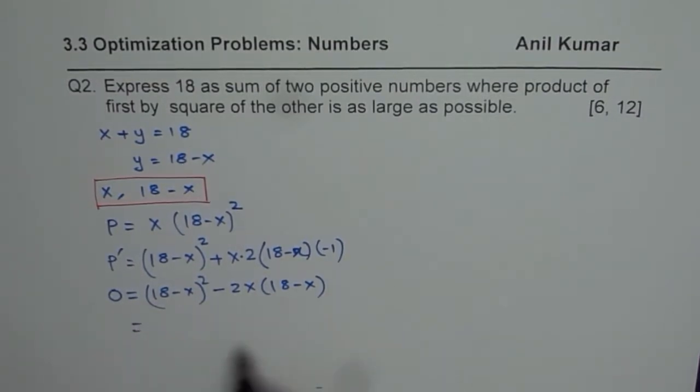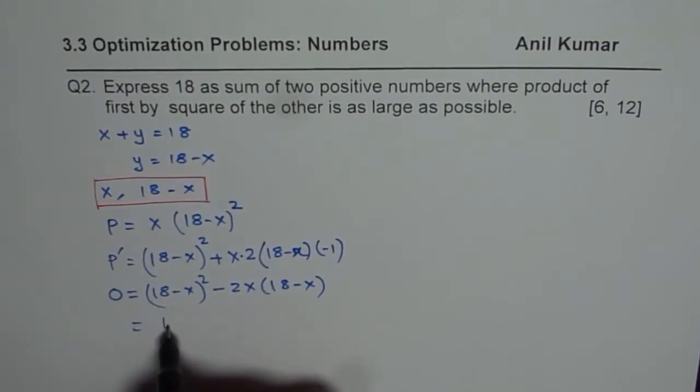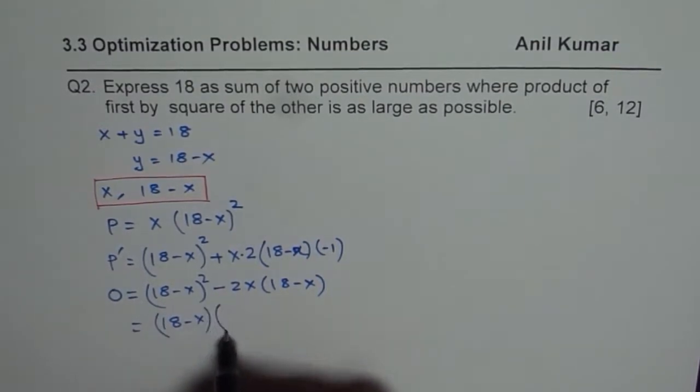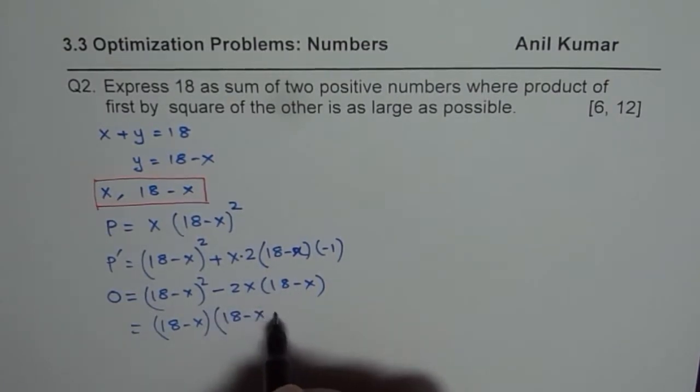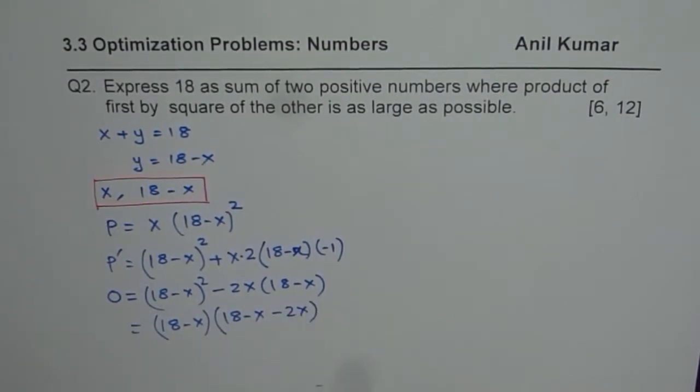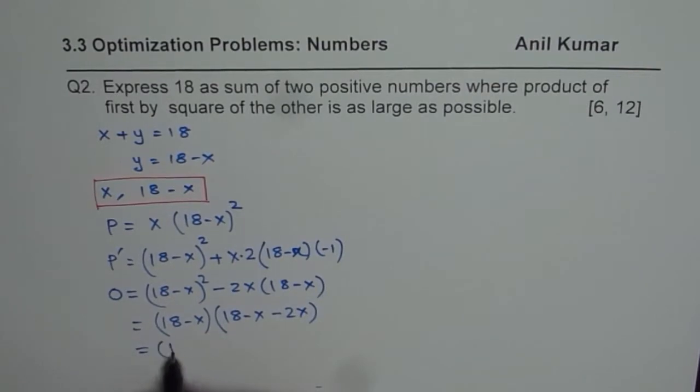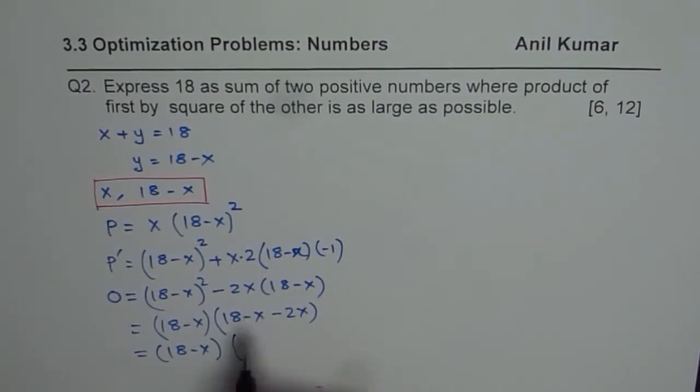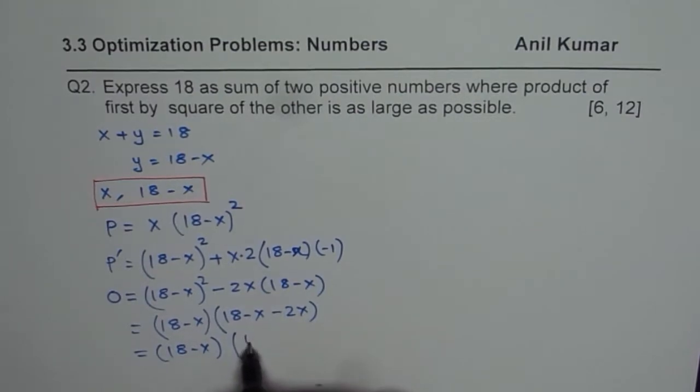Now to solve this, 18 minus x is common. It is good to factor rather than expand. So that is also a strategy. So you are left with 18 minus x times the other number which will be 18 minus 3x. Correct.